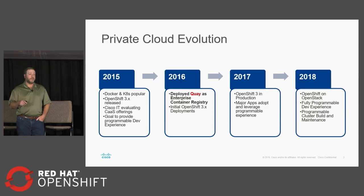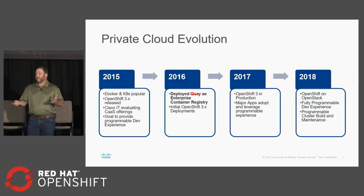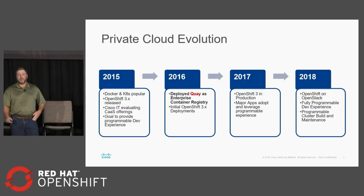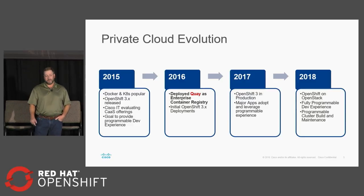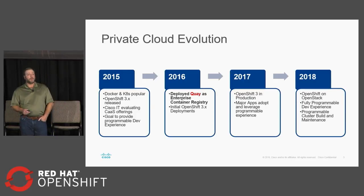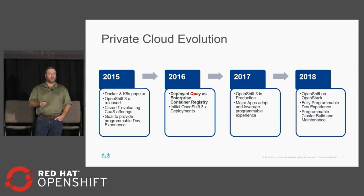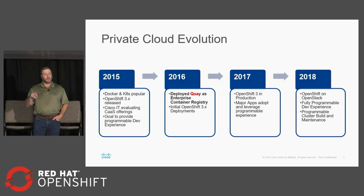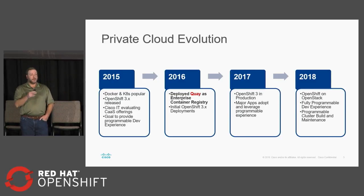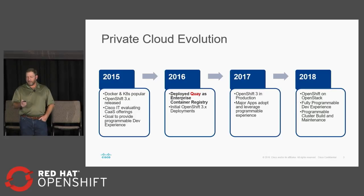In 2016 is when we really got into the initial delivery of some of these services. And while we've shared a lot of our OpenShift stories at these forums, one of the things we didn't highlight was our Enterprise Container Registry story. We actually deployed Quay prior to OpenShift in 2016. We saw that developers were going to really pick up this container thing and we felt there was a need to centralize that function within Cisco. Last year at this forum, we shared that we were in production with OpenShift 3, with large customers deploying in a cloud-native fashion across multiple data centers. And as we go into the future, we're building out OpenShift on top of OpenStack. With that, I'll turn it over to Nara.